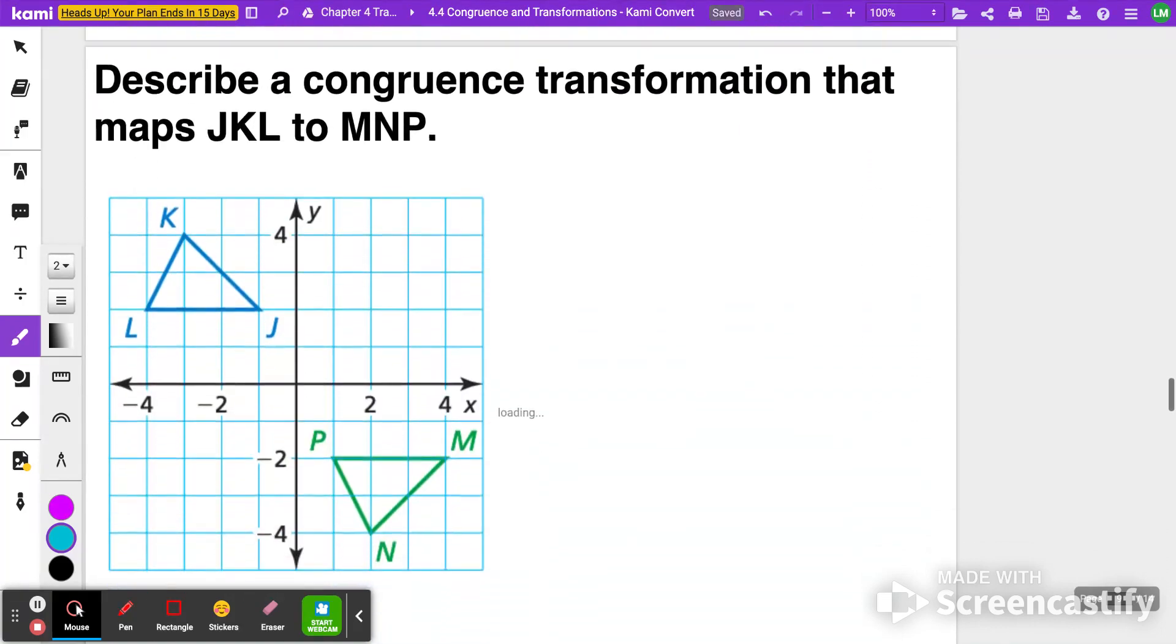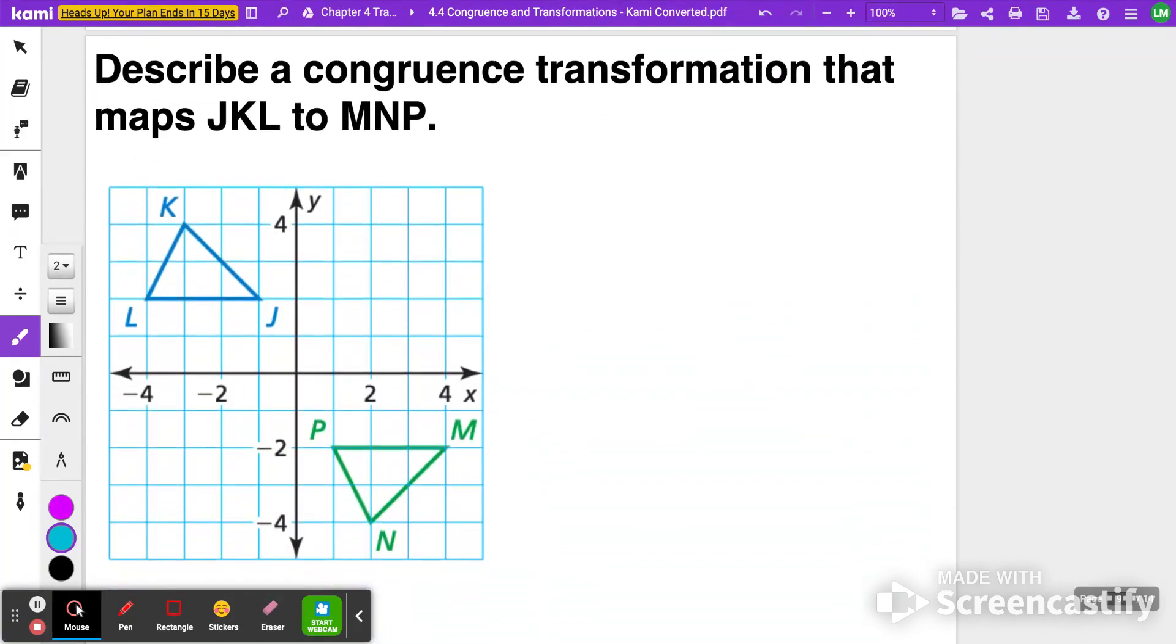So let's see if you can try this one. Describe a congruence transformation that maps JKL to MNP. So see what you can do to maybe reflect it, translate it, whatever you want to do. Pause the video here, see what you choose, and then we'll click play to determine what we can do next.